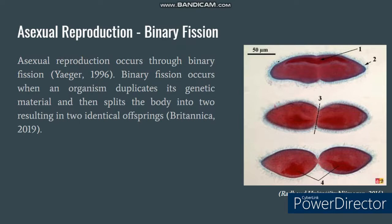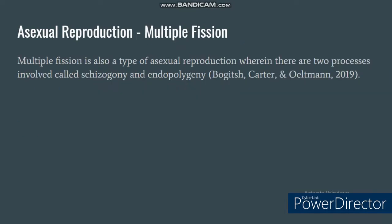There can be different planes of division. For example, in flagellates, it divides longitudinally, while in ciliates, it divides transversely. There is also another type of asexual reproduction called multiple fission, which involves two processes called schizogony and endopolygeny. In multiple fission, the rate of organelle and nuclear division is very fast and is accompanied by cytokinesis. Schizogony results in a multinucleated cell called schizont, while endopolygeny is similar to the process of budding.